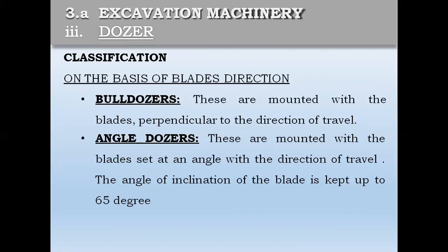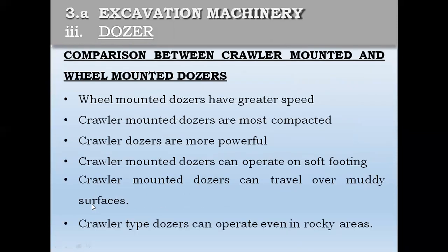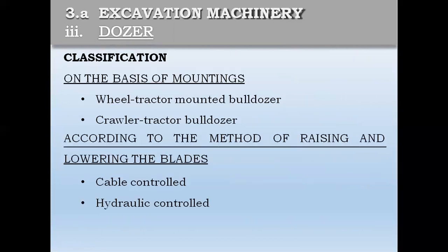The classification of bulldozers is based on the blade direction. Dozers are mounted with the blade perpendicular to the direction of travel — these are called bulldozers. Angled dozers have the blade set at an angle to the direction of travel, with the angle of inclination kept up to 65 degrees. Based on the type of wheel, we have wheel tractor-mounted dozers and crawler tractor bulldozers. According to the method of raising and lowering the blade, there are cable-controlled and hydraulic-controlled types.